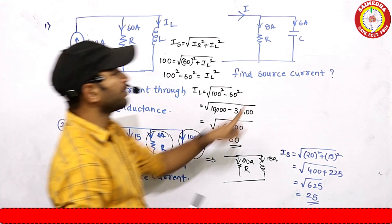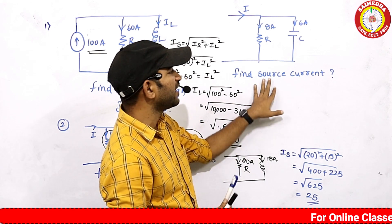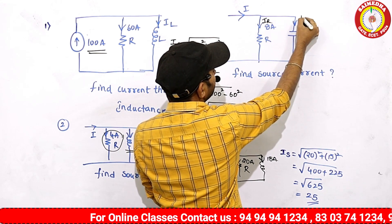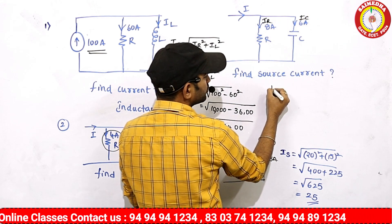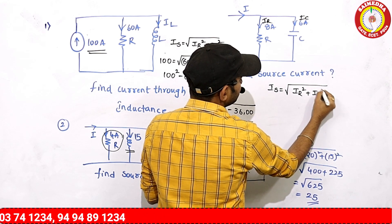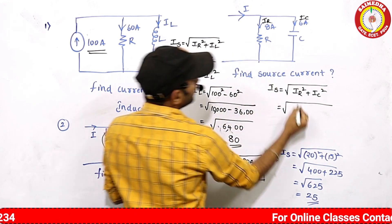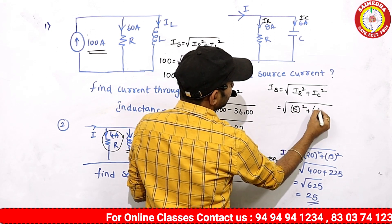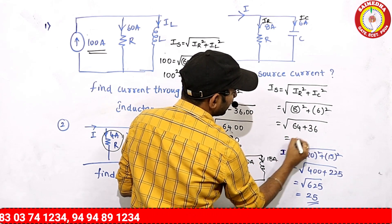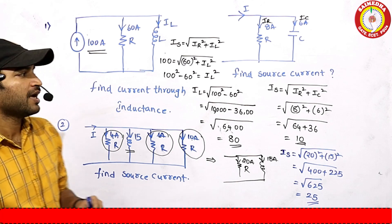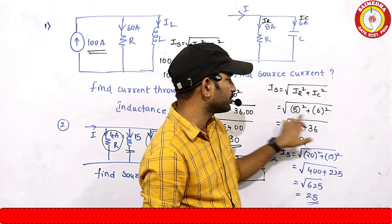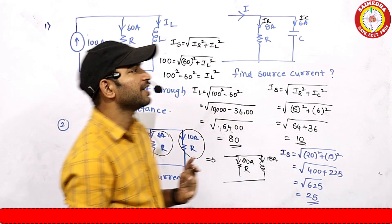The third type of problem is resistance and capacitive load — find the source current. If you already know current through resistance IR and current through capacitance IC, then source current = √(IR² + IC²) = √(8² + 6²) = √(64 + 36) = √100 = 10A.